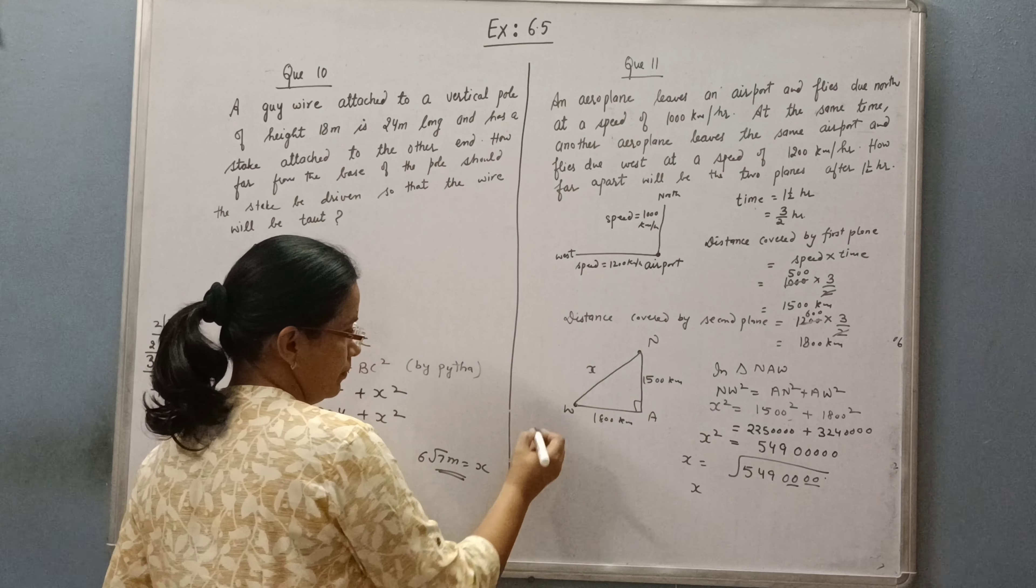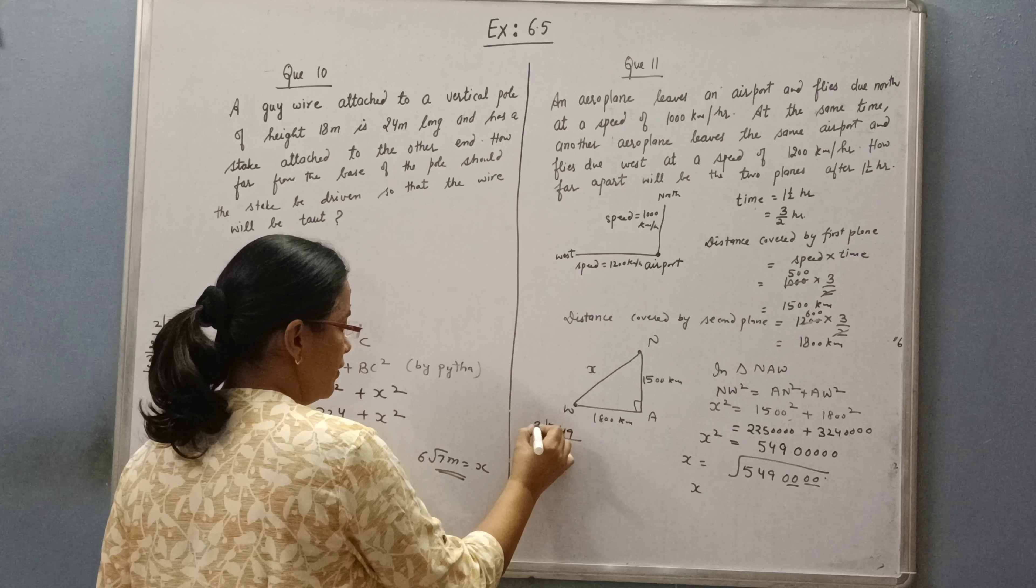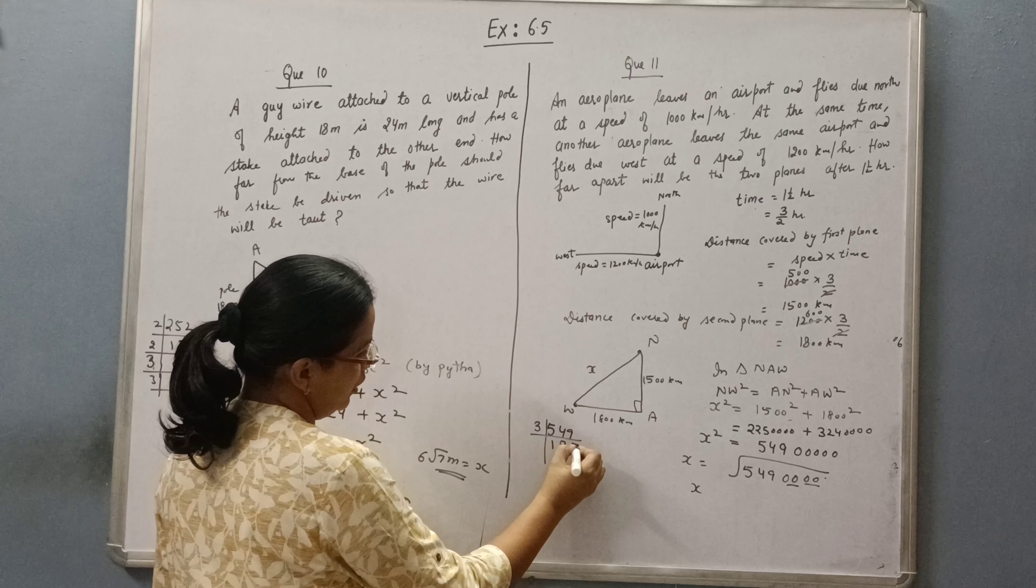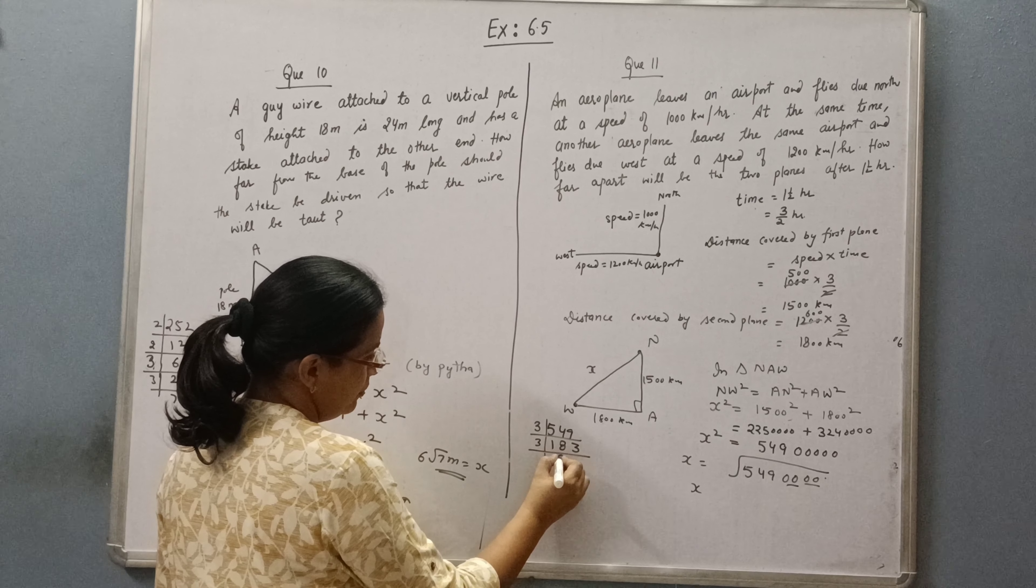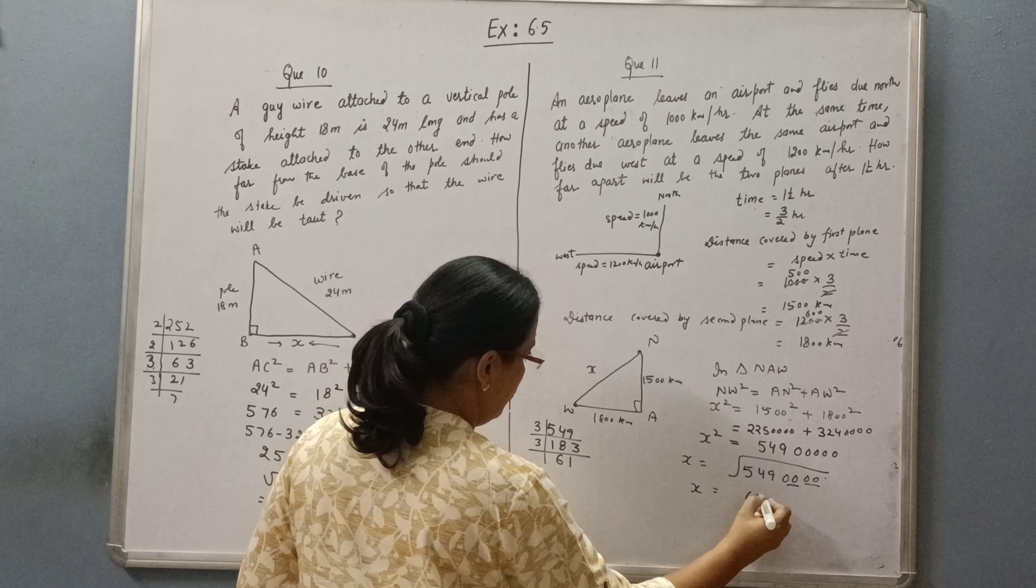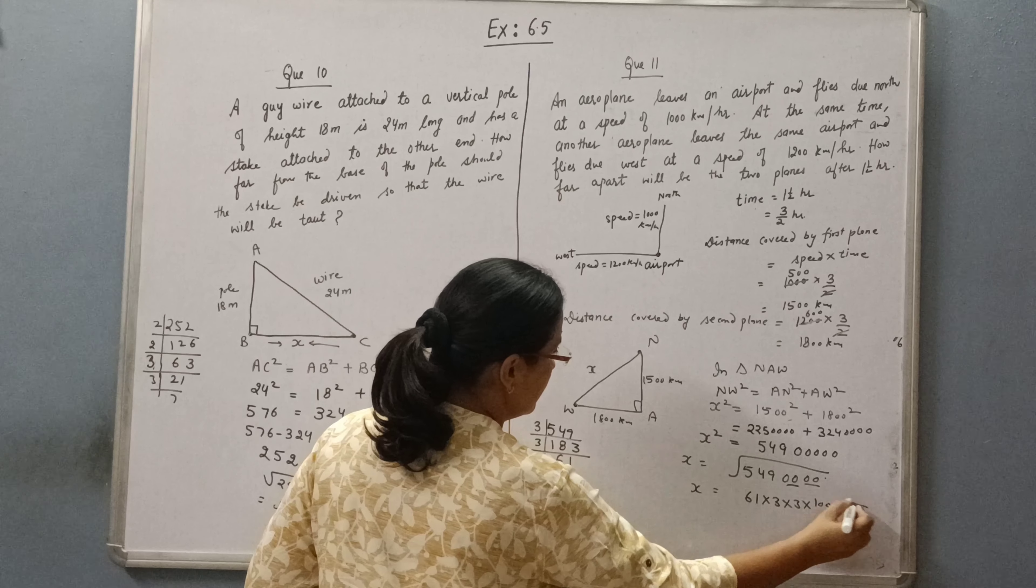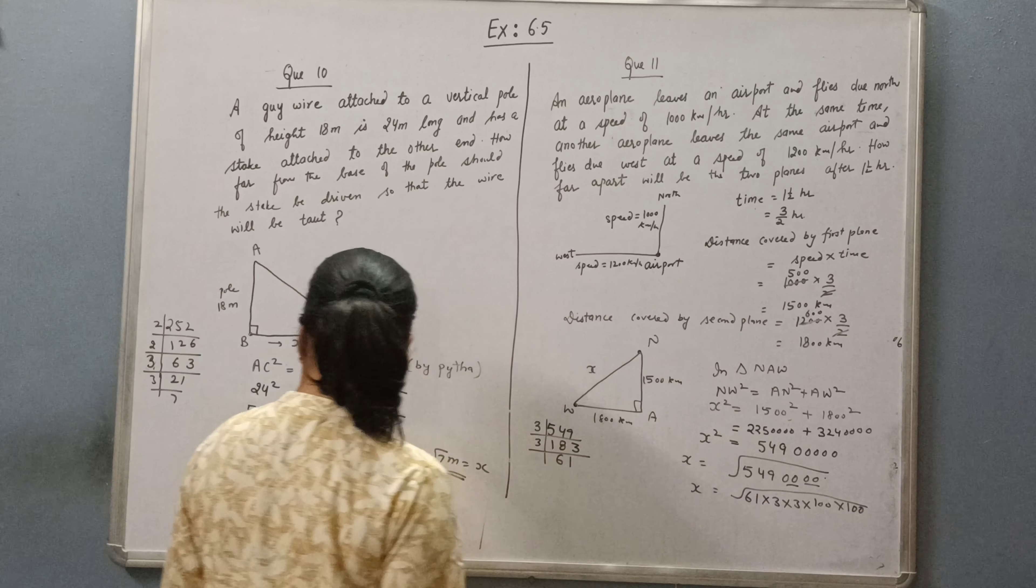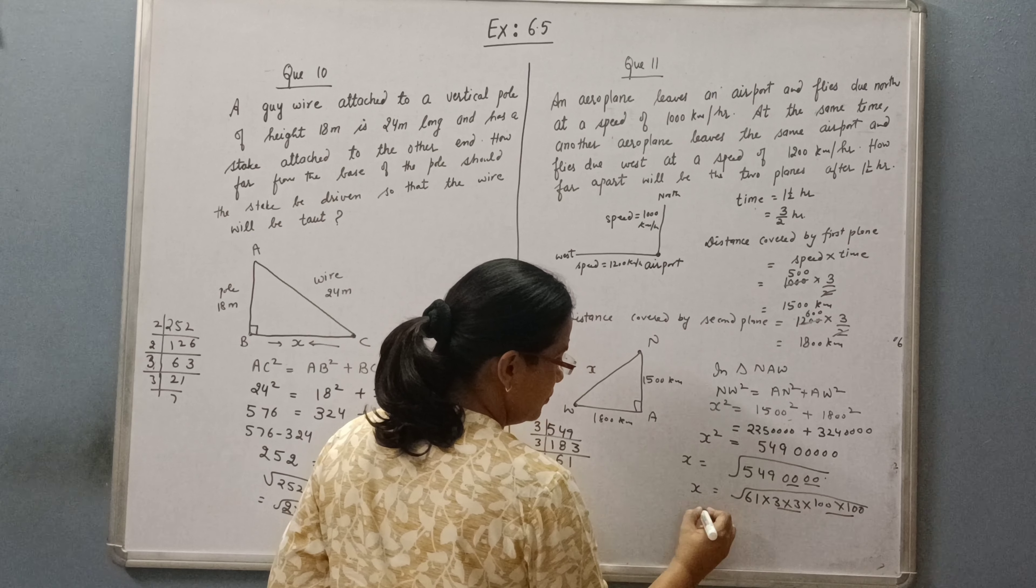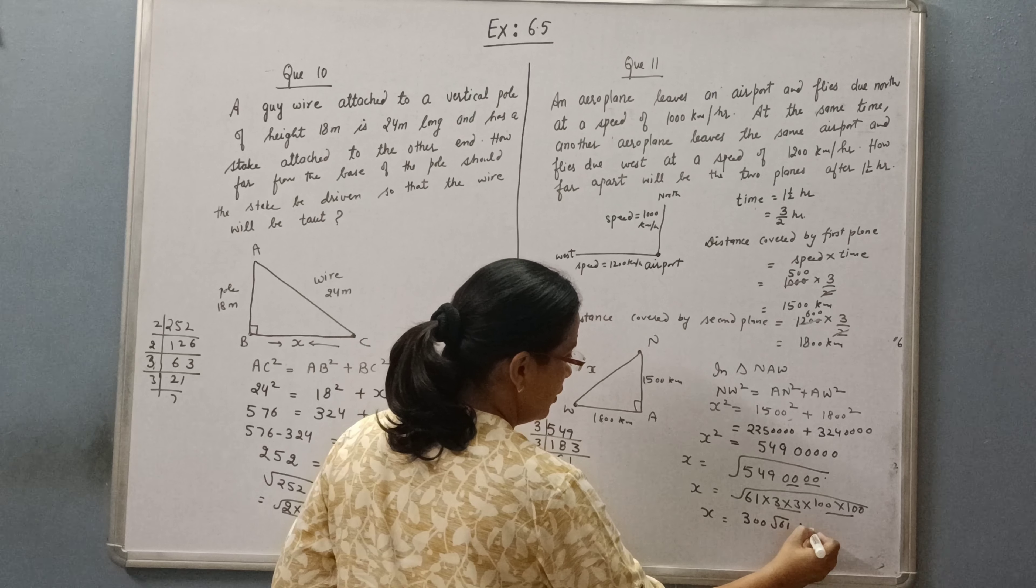Now we have to solve it. Let's factorize it. We get 3, 3, 3, 3, 61, 100, 100. So it comes out to be 300 times 3 root 61, which equals 300 root 61.